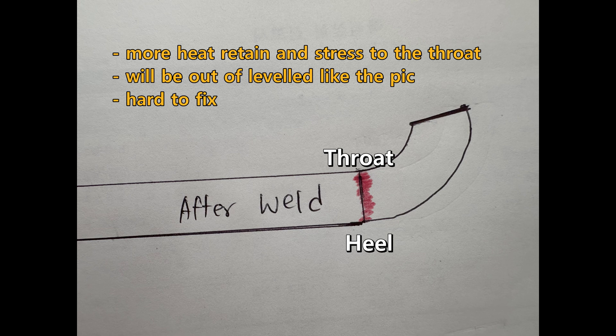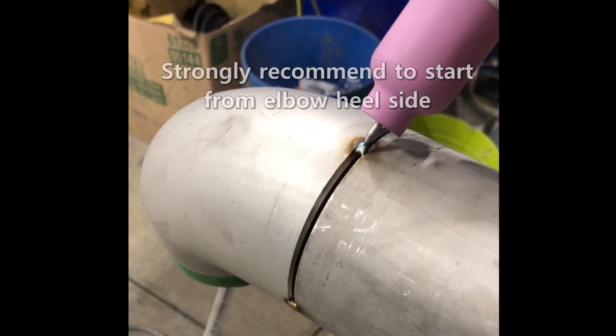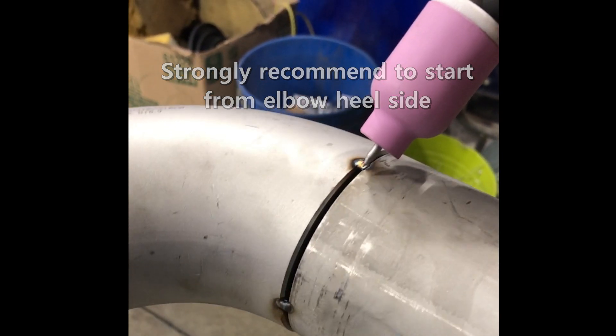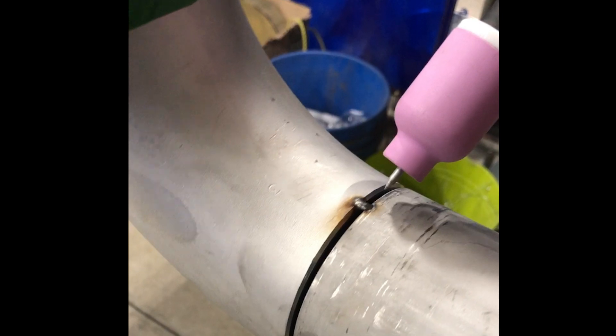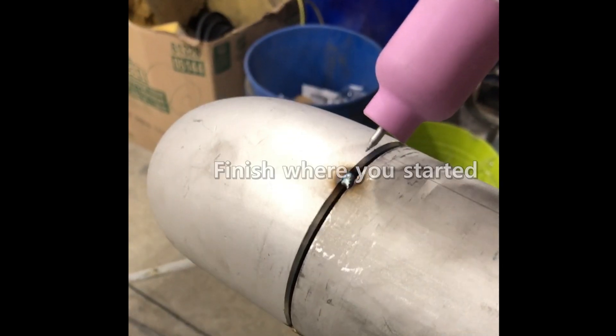Therefore, it will be out of level like the picture. Like the nozzle, it is very hard to fix it if it is tilted to the throat side. With these reasons, I strongly recommend to start from the heel side. As you see in the video, I always start to weld from the elbow heel side.